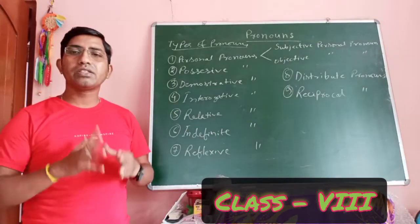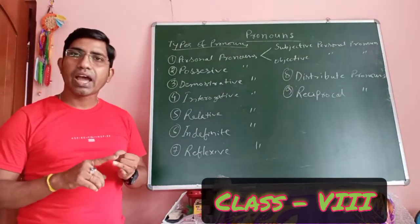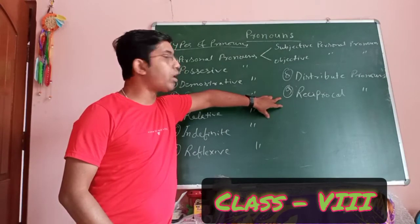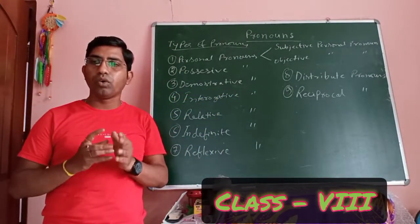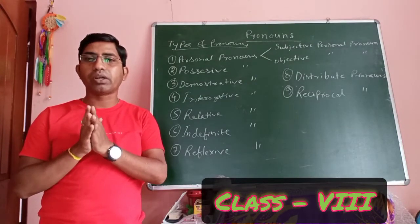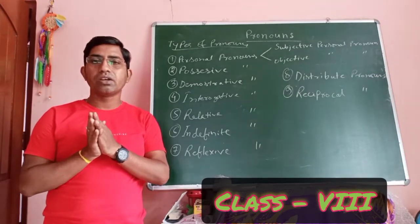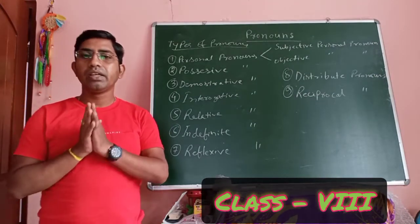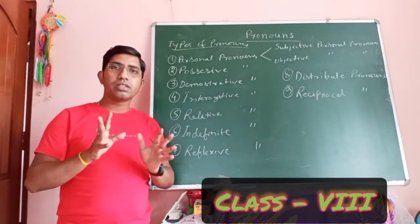Next, distributive pronouns are words used to refer to persons or objects one at a time — like each, neither, either, etc. Next, reciprocal pronouns are words used to refer to two or more people who carry out an action simultaneously and are affected by its consequences at the same time — for example, each other, one another.